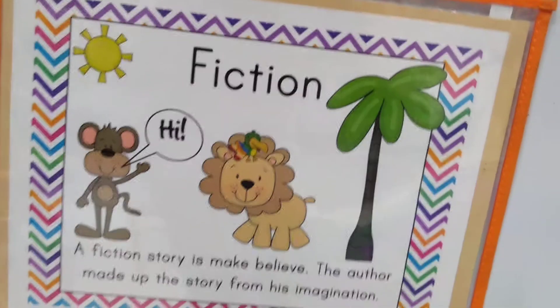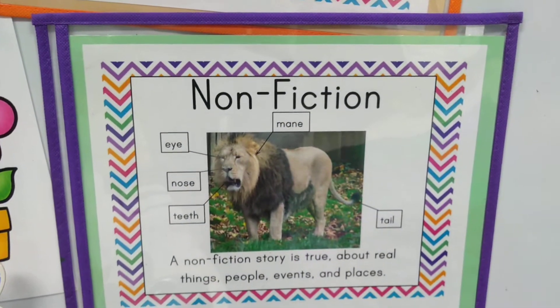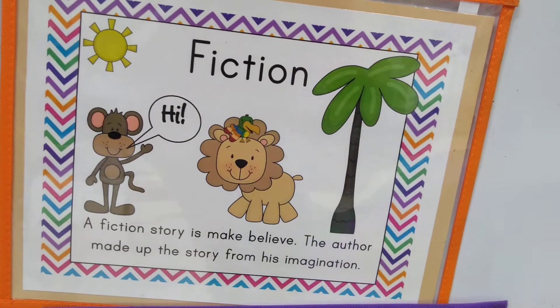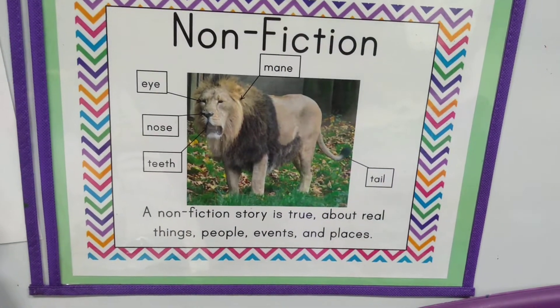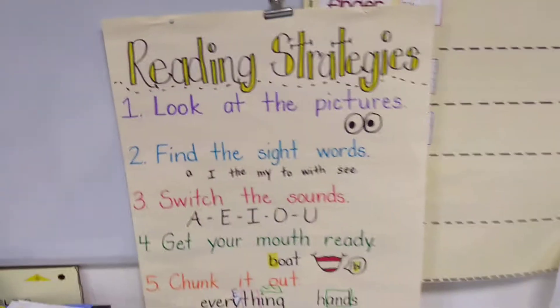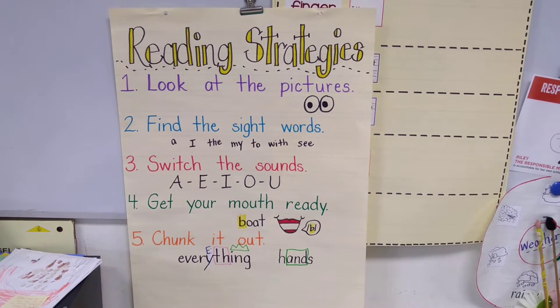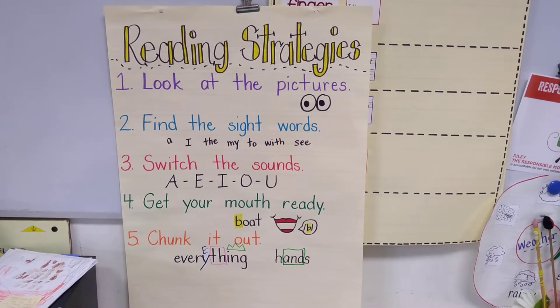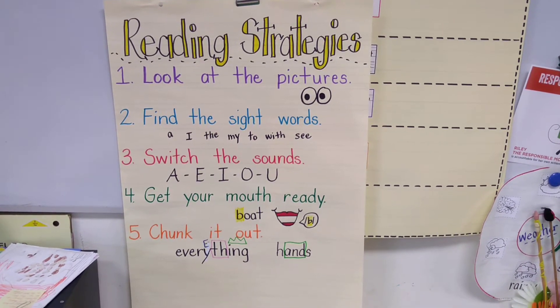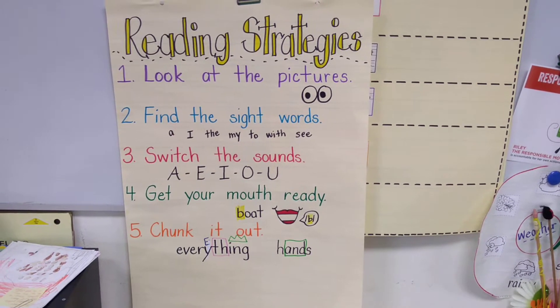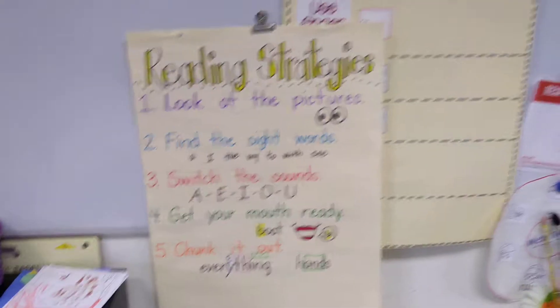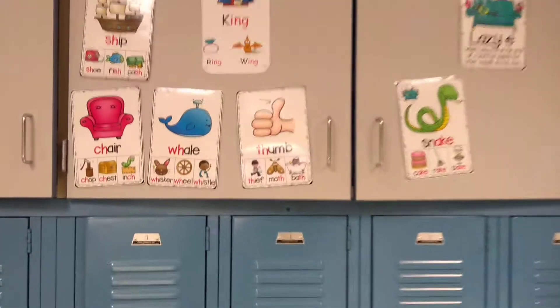We've also talked about fiction and non-fiction. Remember, fiction means it's fake — it's make-believe. And non-fiction means real; it really happened. Let's talk about reading strategies: one, look at the pictures; two, find the sight words; three, switch the sounds; four, get your mouth ready; five, chunk it out. Let's take a walk over to our cabinets to talk about our reading rules.